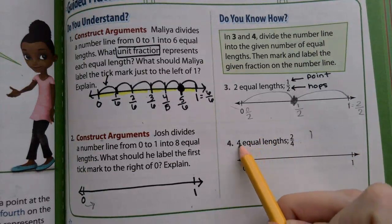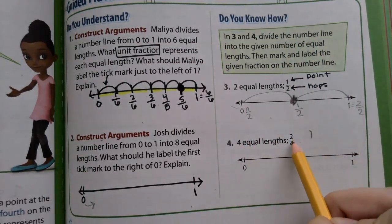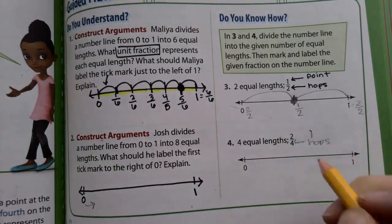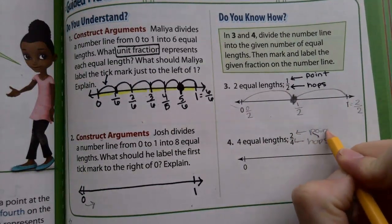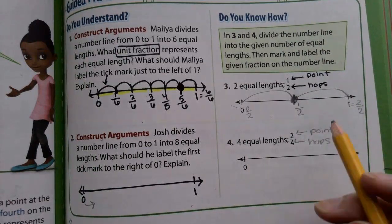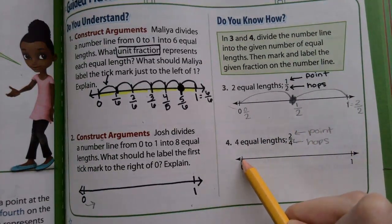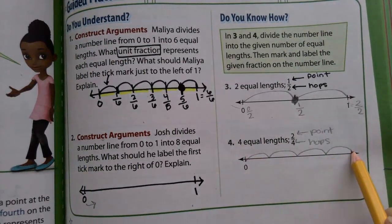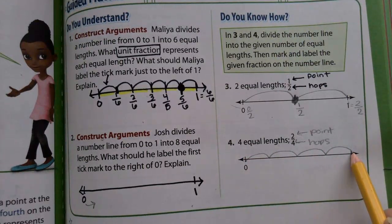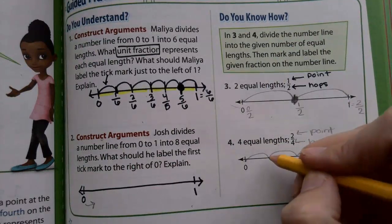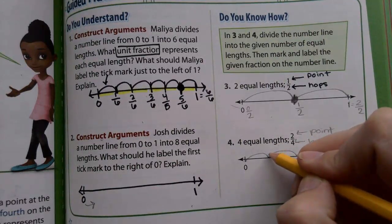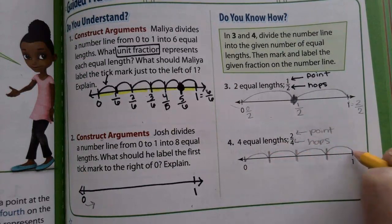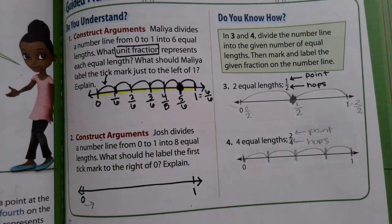Number 4. 4 equal lengths. We have 4 total hops. And my point is going to go 2 hops in. Alright, our 3 steps. Start on 0 and complete the hops. 1, 2, 3, 4. Redraw if you need to. Now we need to complete the marks. Draw where it lands on the number line. There's already 1 for 1 and there's already 1 for 0.